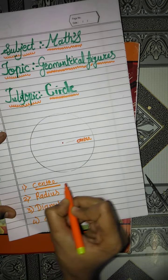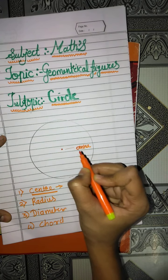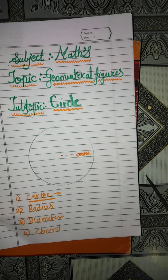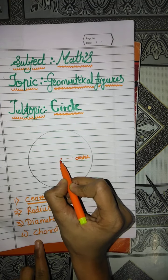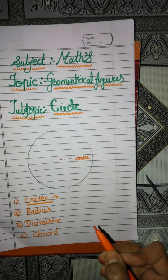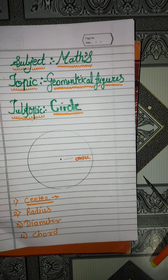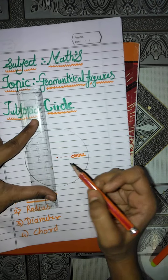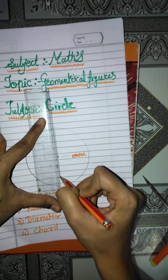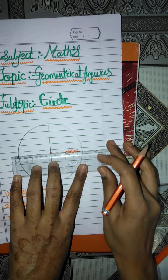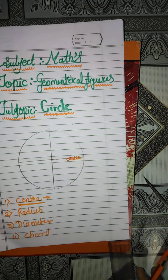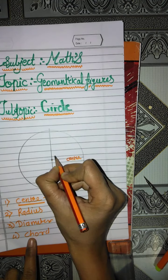Let's learn about the center. What is center? The definition of center is: the point at which these lines meet each other is the center of the circle. Look at this — the lines meet each other. That point is known as center. In the figure, A is the center of the circle.